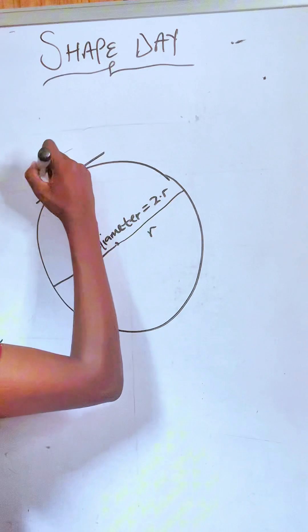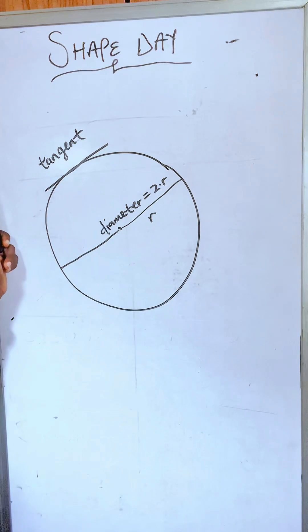You hear of something called a tangent. A tangent is a line that touches the circle at a unique point and it lies outside the circle.